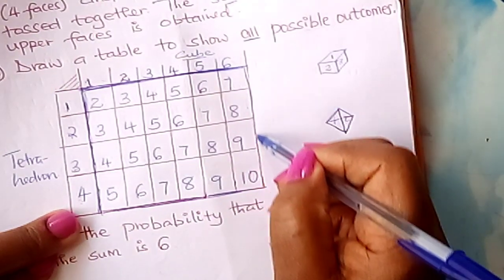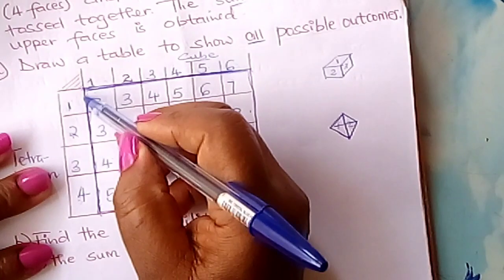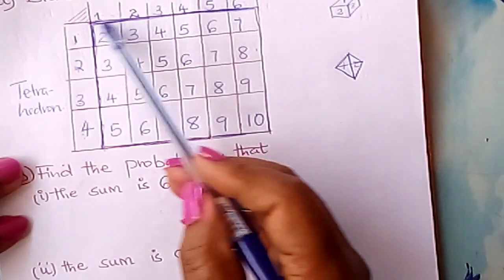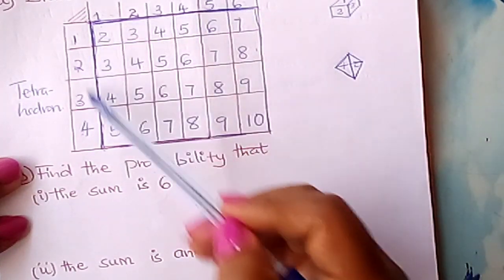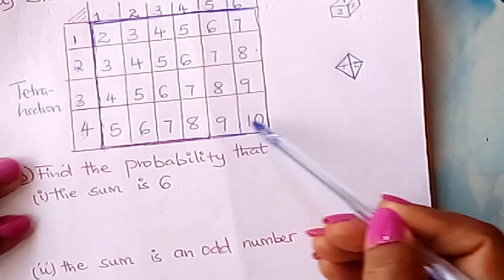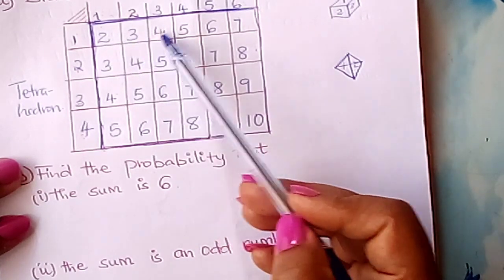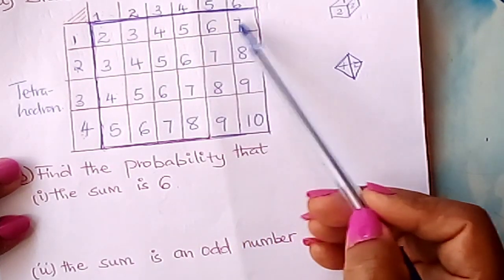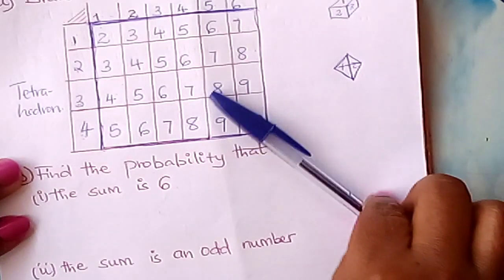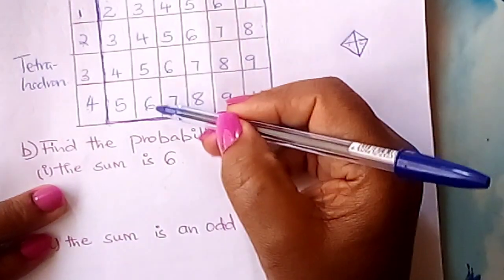These are all the possible outcomes enclosed in this rectangle. There are four rows and six columns, giving us twenty-four possible outcomes. From here, you are asked to find the probability that the sum is six.